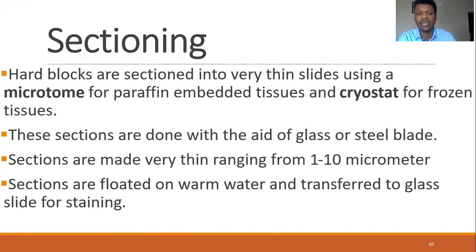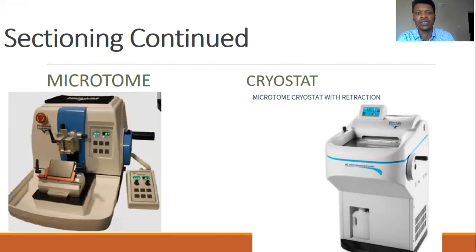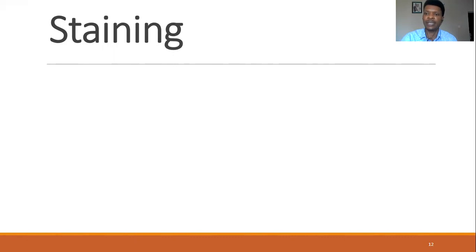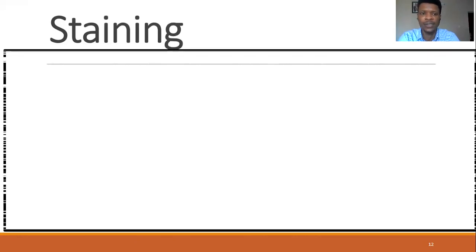After sectioning, the tissues are stained. Before the tissues are stained, it's important to note that they are taken back through degrading stages of ethanol. You begin from absolute ethanol and take it down to water, and from there you take it to the dyes. Because the tissue is colorless, you need to dye the cells to be able to see and appreciate the cellular cytoarchitecture.